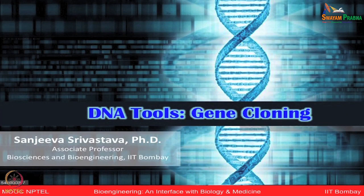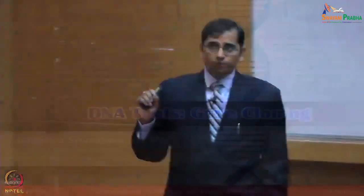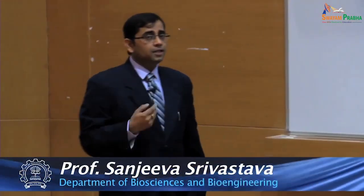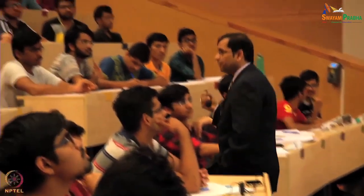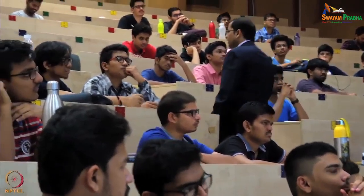If you remember from one of the previous discussions, I had talked briefly about DNA cloning. Although we talked about cloning in many ways — including plant cloning or organism cloning — let us recall the DNA cloning part and refresh on this, beginning with plasmids. A plasmid is an extra-chromosomal component of bacteria. In addition to the bacterial chromosome, bacteria also possess these extra-chromosomal elements known as plasmids.